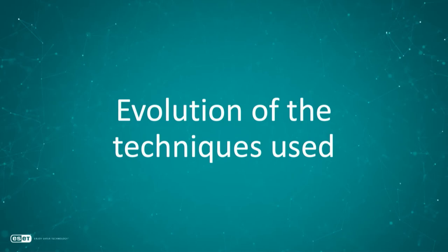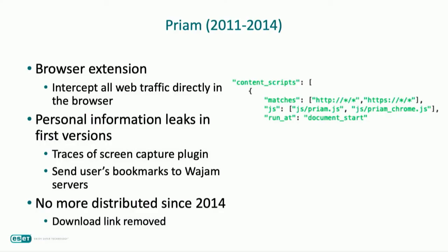Now let's look deeper at the techniques used by WAJAM — especially those for traffic interception. The first version was distributed as a browser extension. It can easily inject JavaScript code in any web page using a manifest file that matches any URL, HTTP or HTTPS. An interesting point is that some older versions contain traces of a screen capture plugin, though the full code was never implemented. Those versions were also able to send the user's bookmarks to WAJAM servers.